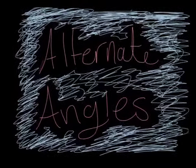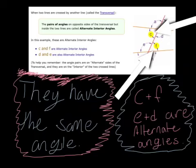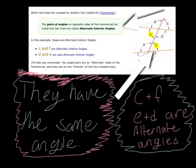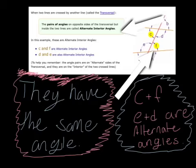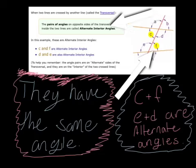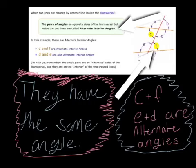Alternate angles. The pair of angles on the opposite side of the transversal — yeah, what she said — but inside the two lines, called alternate interior angles.